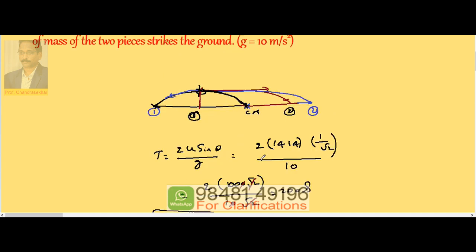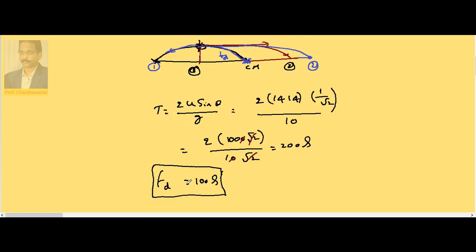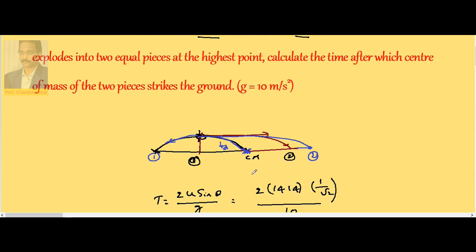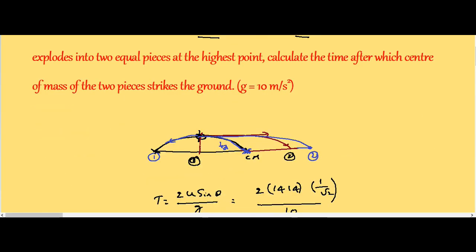So irrespective of the explosion velocity gained by the two pieces, center of mass continues to move along the same path and strikes the ground. So this is our time of descent. The time of descent is half the time of flight. Since time of flight is 200 seconds, descent becomes 100 seconds. So after 100 seconds, the center of mass of the two pieces will strike the ground.